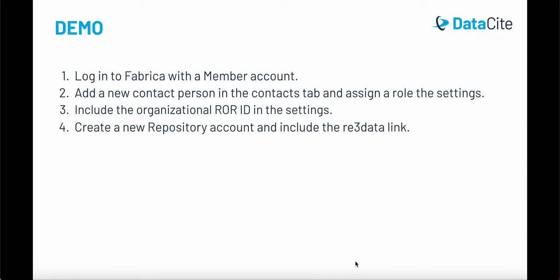I'm now going to run through a quick demo to show you how to log into Fabrica with a member account, then add a new contact person in the contacts tab and assign a role in the settings, then see how to include the organizational ROR ID in the settings, and finally create a new repository account and include the RE3 data link.